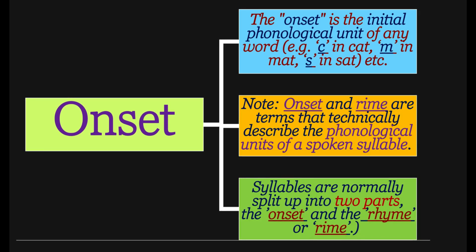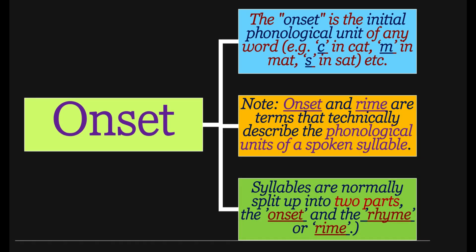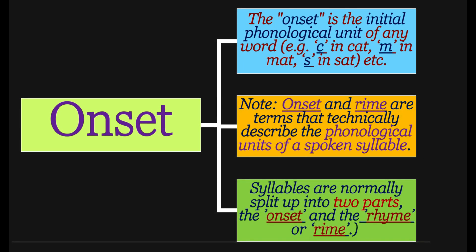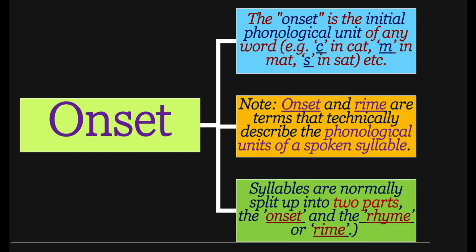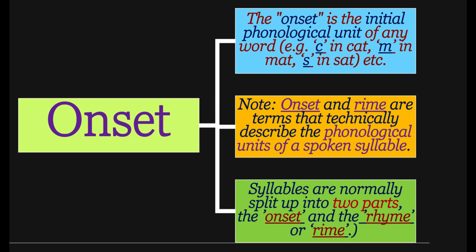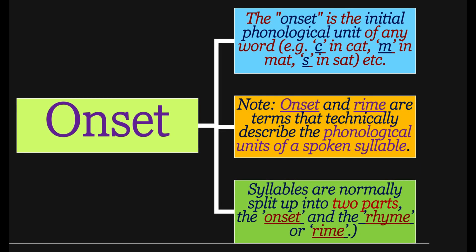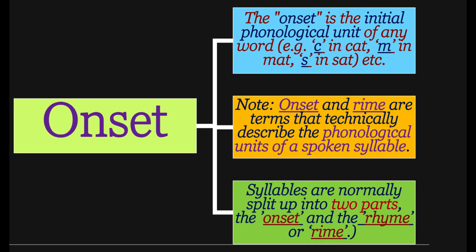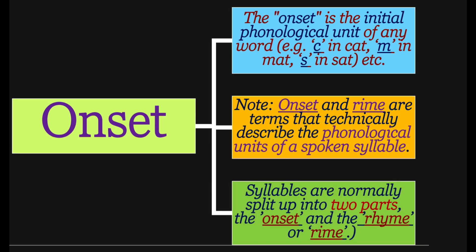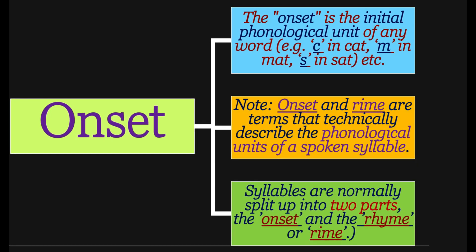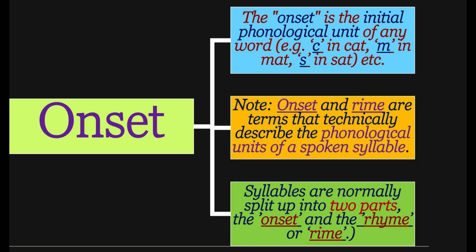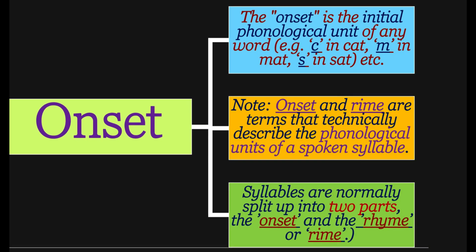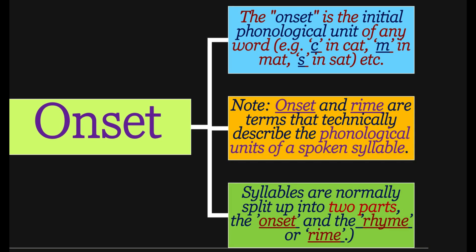The onset helps children memorize new words. If you look at the spelling of 'cat,' 'mat,' and 'sat,' you find that all three end in 'at.' Children learn new words by recognizing the initial phonological unit — how 'c' in cat differs from 'm' in mat and 's' in sat — and this helps children memorize new words. This is known as onset.